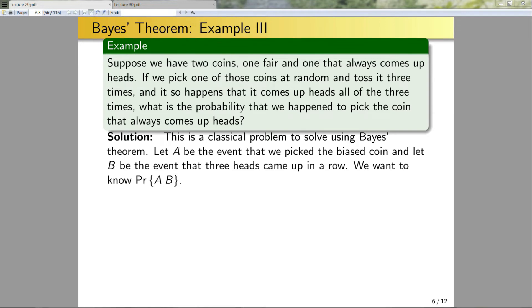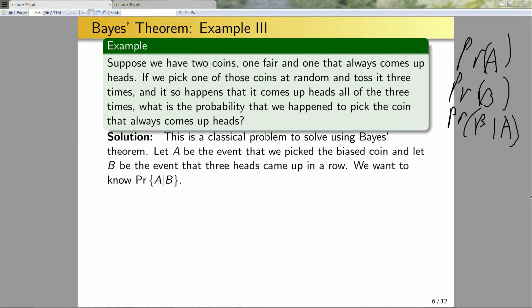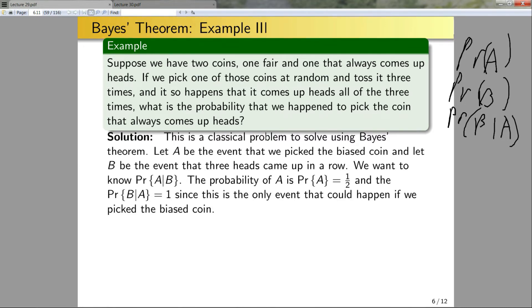To use Bayes' theorem I need three things: the probability of A, the probability of B, and the probability of B given A. The probability of A is simply one-half — we have two coins and pick one at random. The probability of B given A: what is the probability that three heads come up if I picked the biased coin? Since the biased coin always displays heads, the probability of getting three heads is equal to one. So now I need to compute the probability of B.